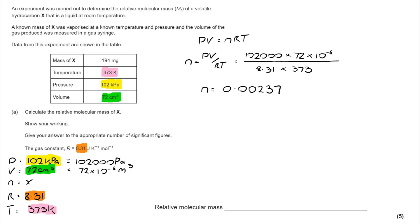Now I don't want moles, I want the MR. But I've been provided with the mass of X as well. So I can calculate MR by taking M and dividing by N. Now my mass is 194 milligrams. So I need to convert to grams by dividing by 1000. And then I divide all of that by 0.00237. And I get a relative molecular mass of 82.